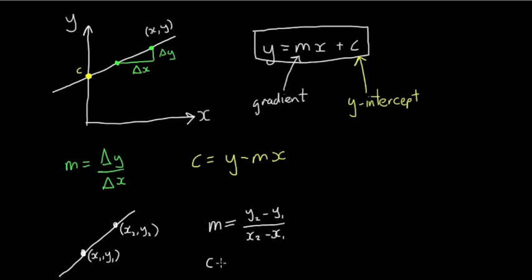And to calculate c, what we do is we substitute one of these coordinates into this equation here. Usually you pick the one which will make the arithmetic easier. So we calculate m, substitute the x and y coordinates into this expression for c, and we can calculate c.